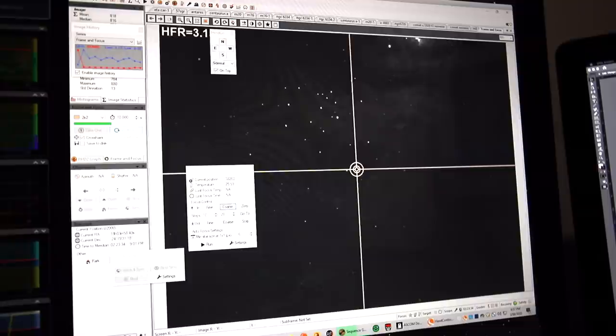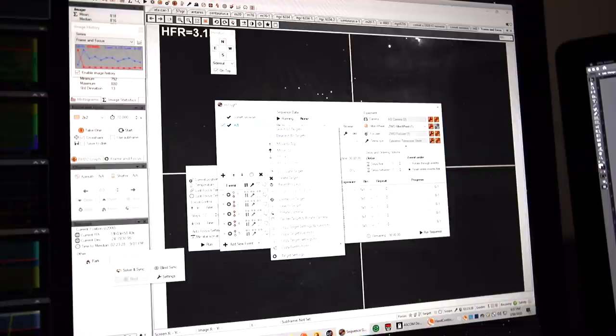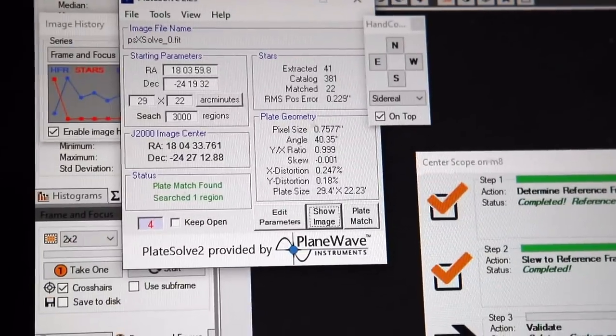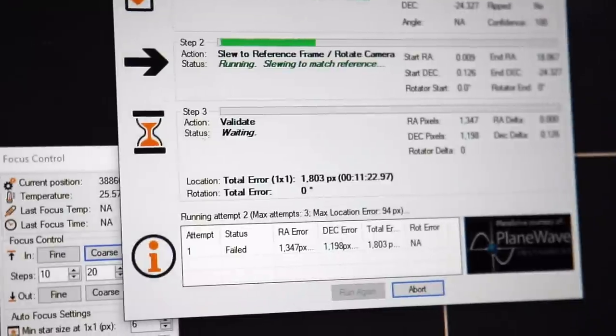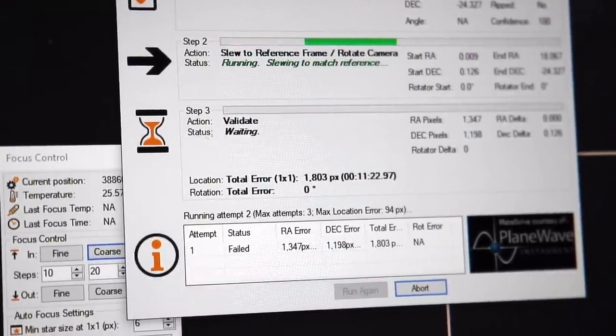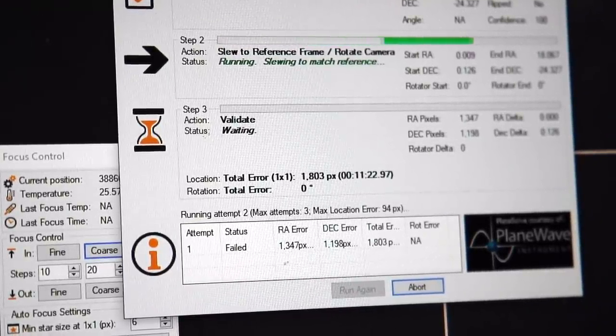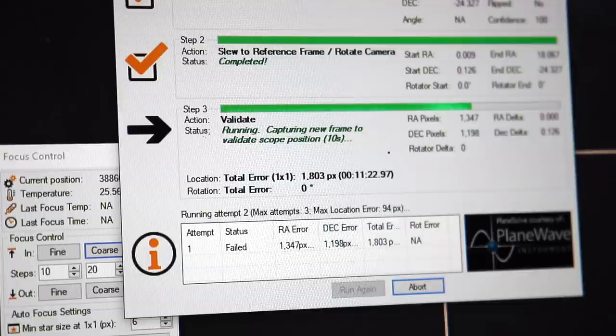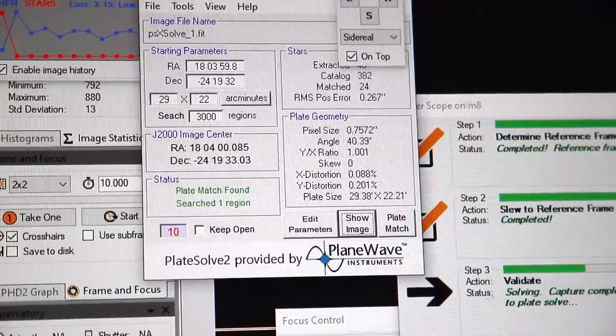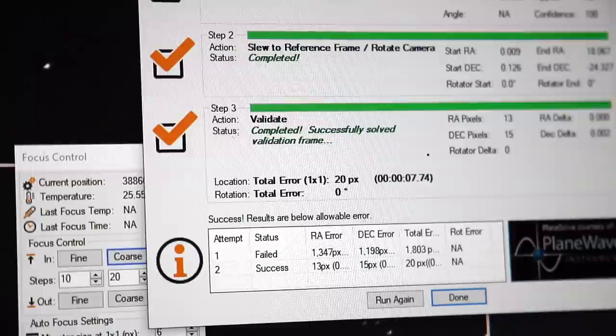Let's try that again with a plate solve. So this time in Sequence Generator Pro, I'm going to say center on target. There's the plate solve there and it has already found a match. It was super quick. Took about a second actually. And it's telling me here that it has failed and that I'm off by a good 1000 pixels. So it's going to move the mount, take another picture and then plate solve again.